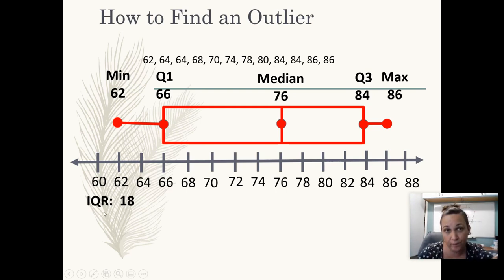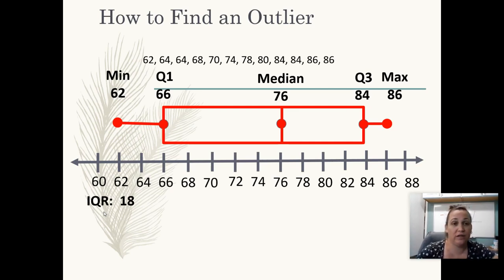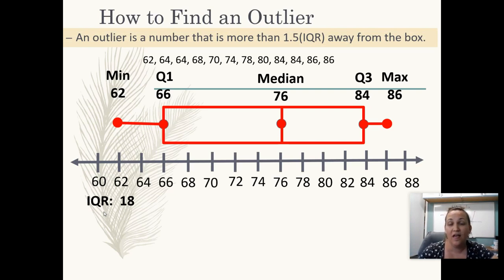So to decide if you have any outliers in your data, you need to see if there is any number that is more than 1.5 times your interquartile range away from the edges of your box. Now that sounded really weird, but I'm going to show you what I mean.